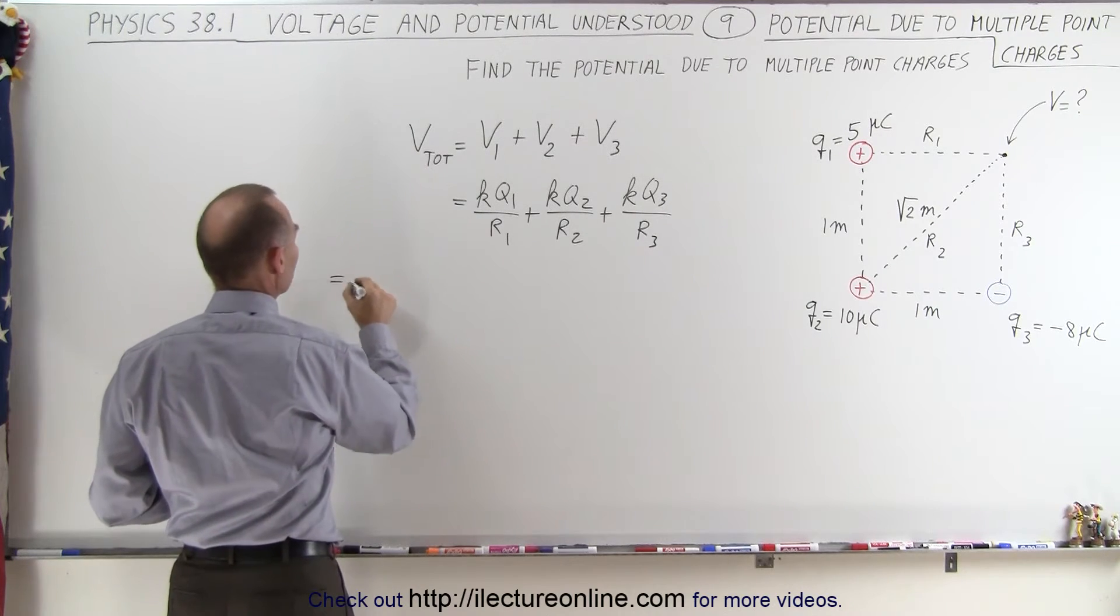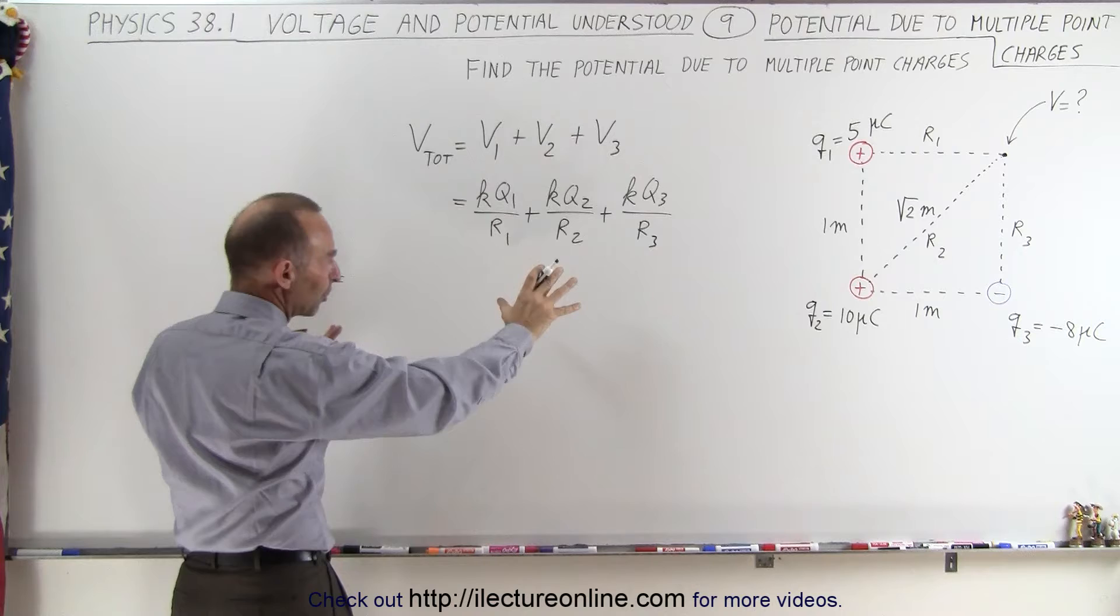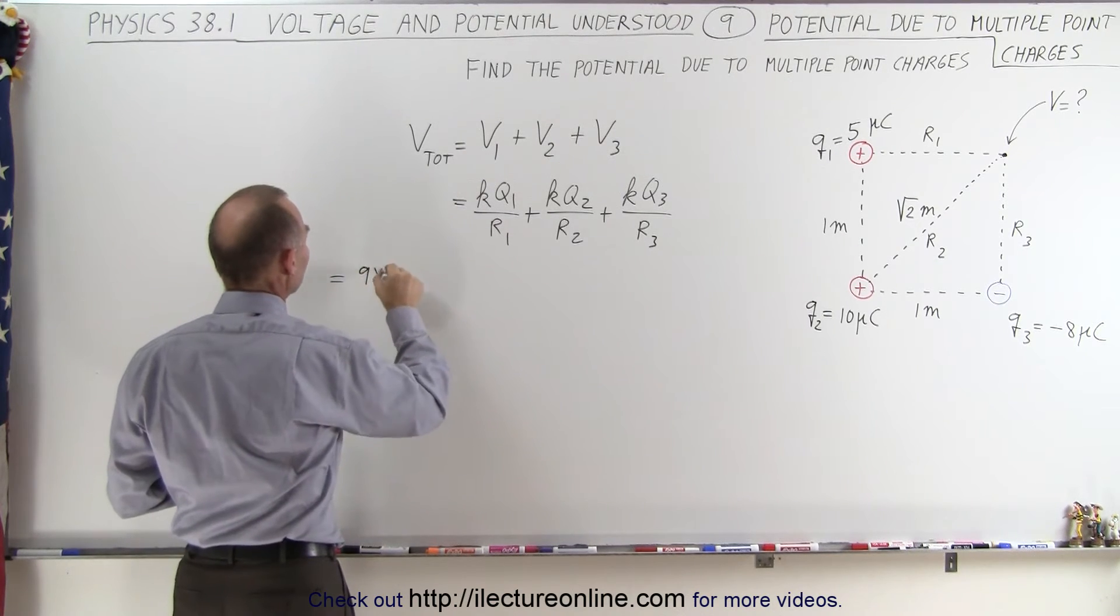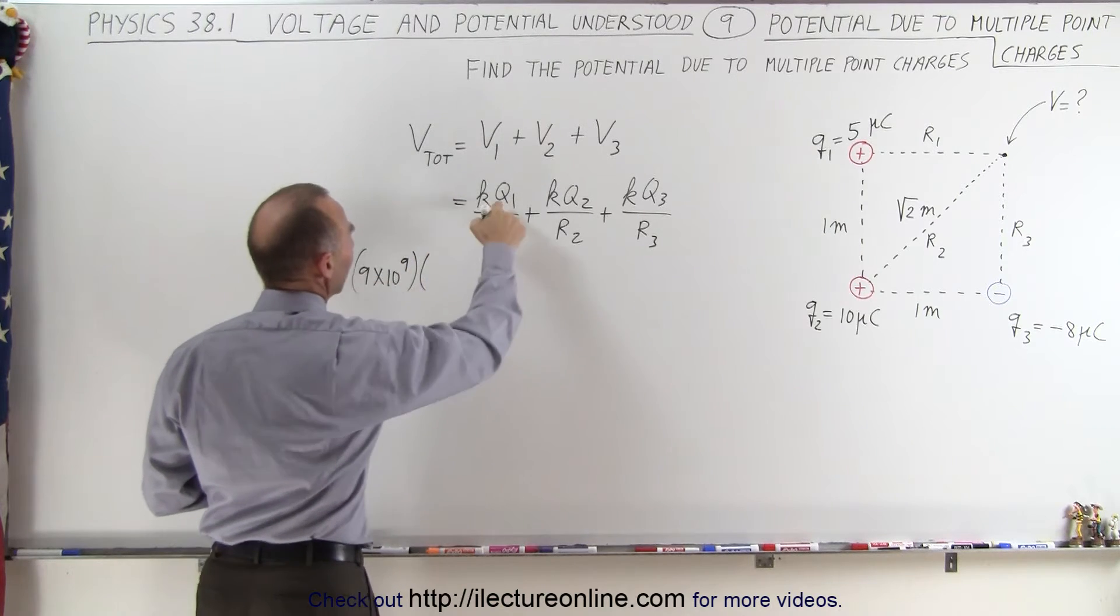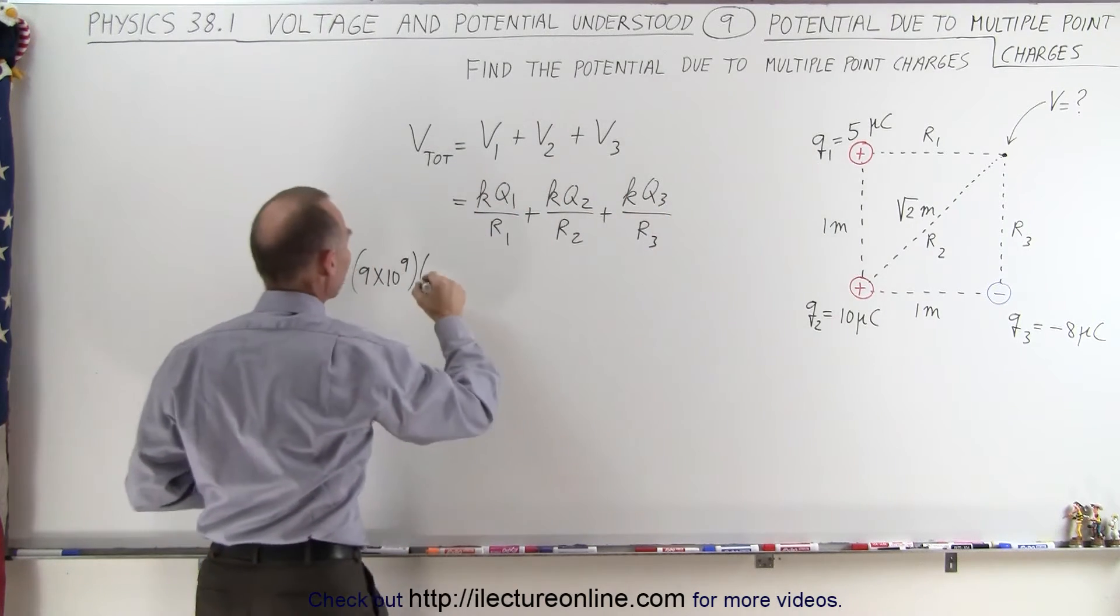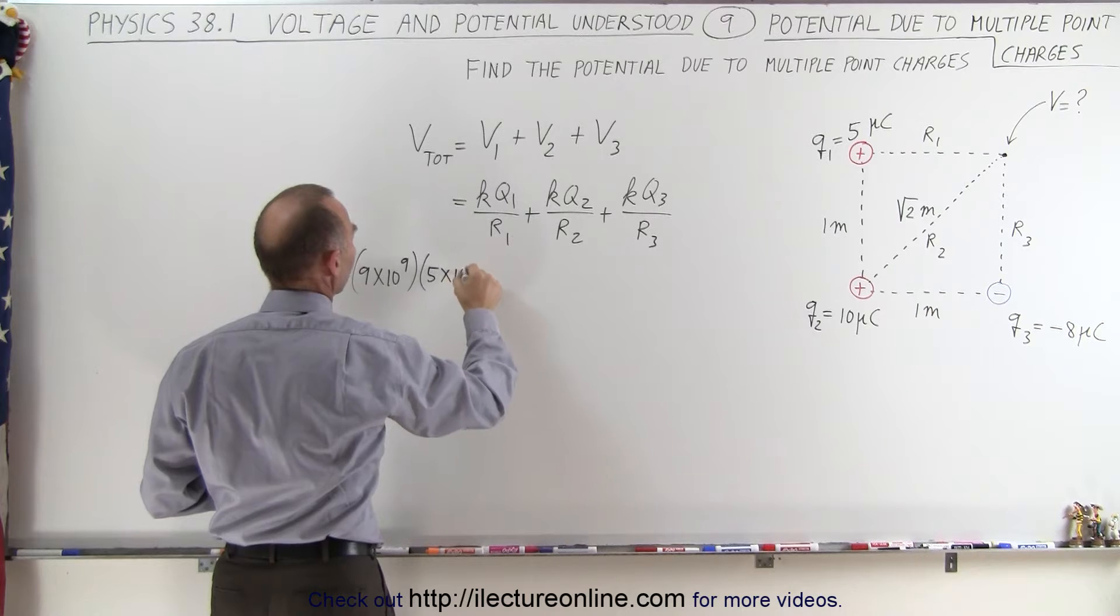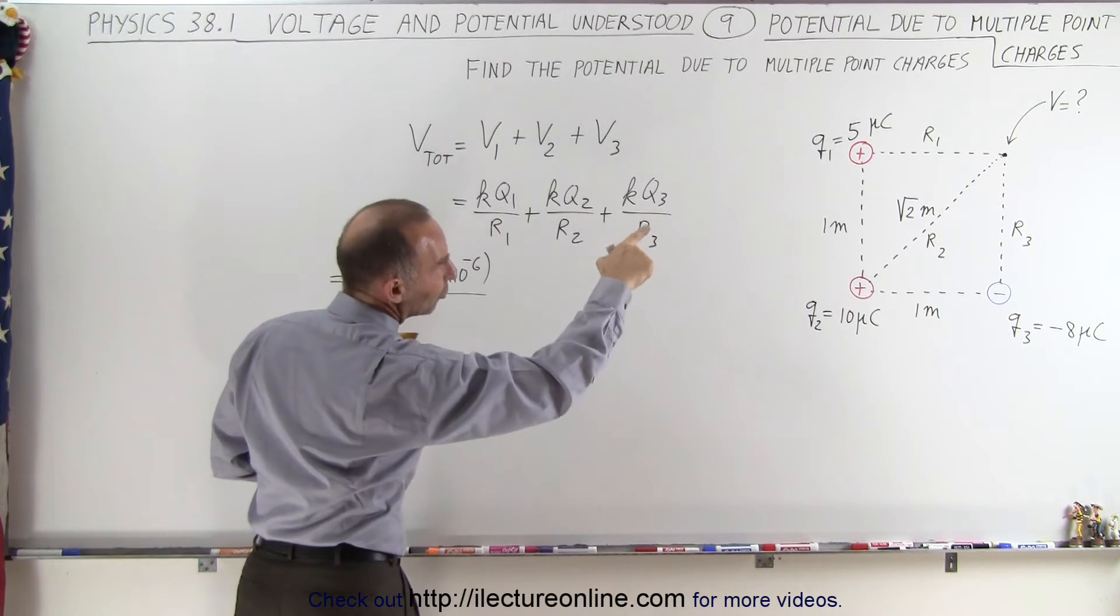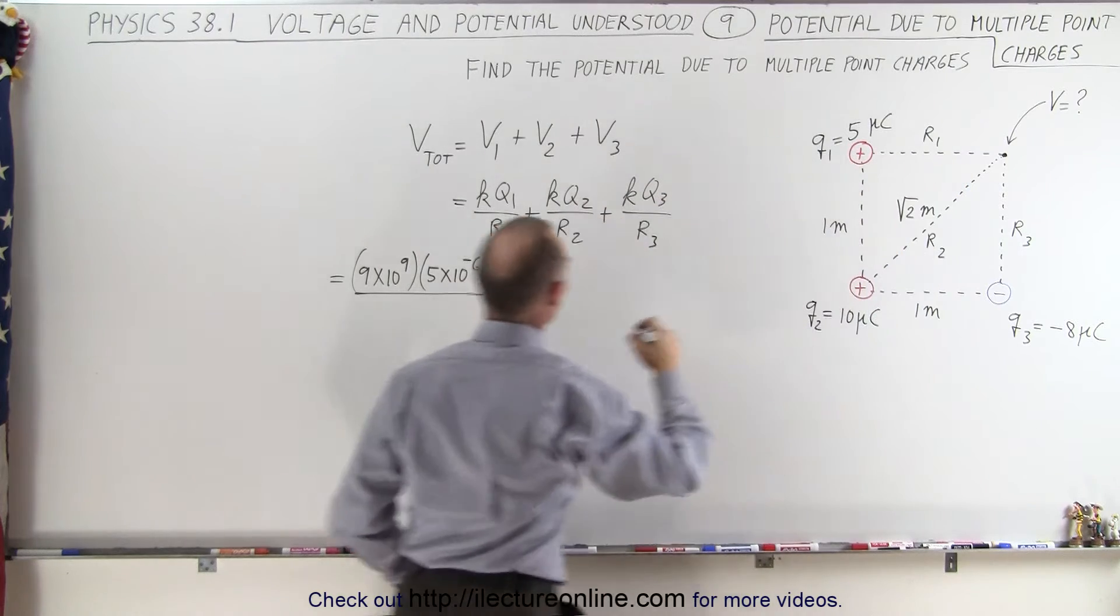So this is going to be equal to - I need a little bit more room, I'm not going to put in the unit to make it a little bit cleaner - so this is going to be 9 times 10 to the 9th, multiply times Q1, which is a positive 5 microcoulombs, and all divided by the distance R1, which is going to be from here to there, just 1 meter long.